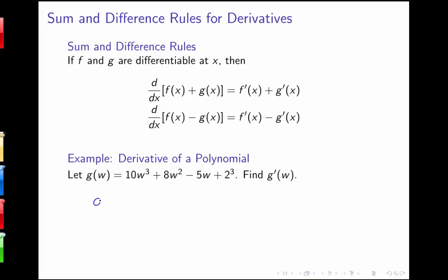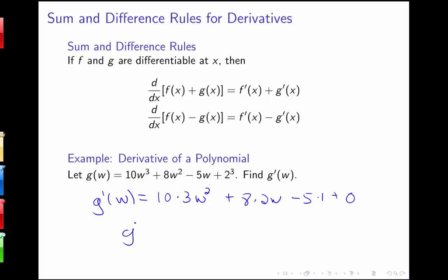Here's an example: g(w) = 10w³ + 8w² − 5w + 8. So g prime of w will be the constant 10 times the derivative of w³, which is 3w², plus 8 times 2w for the derivative of 8w², minus 5 times the derivative of w, which is 1, plus the last term 2³, which is just a number with derivative 0. So g prime of w equals 30w² + 16w − 5.